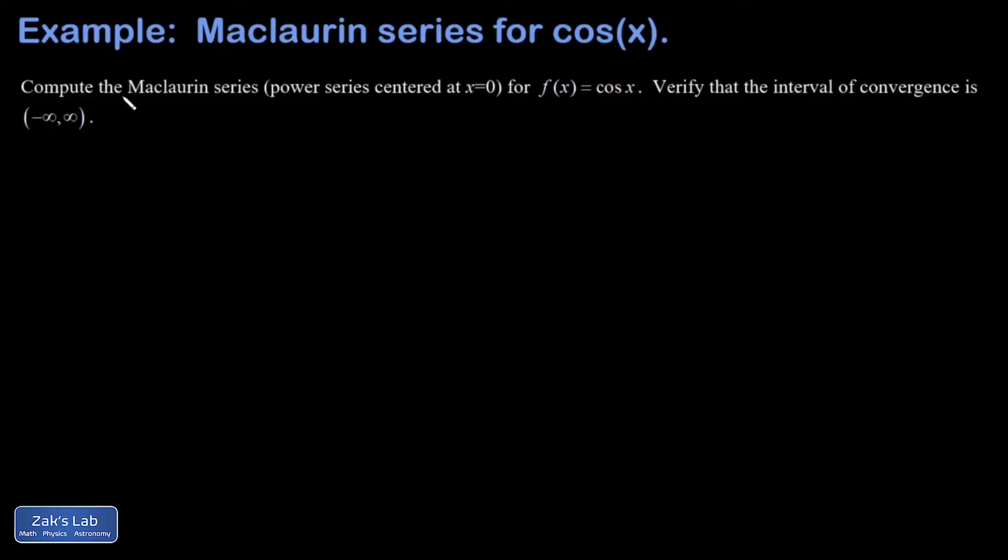In this problem I'm asked for the Maclaurin series for the cosine function, so this is a power series centered at zero. Just a quick reminder of the theory here: the whole idea of the Maclaurin series was to propose that any well-behaved function could be written as a polynomial expansion, provided that we're able to keep infinitely many terms in the expansion.